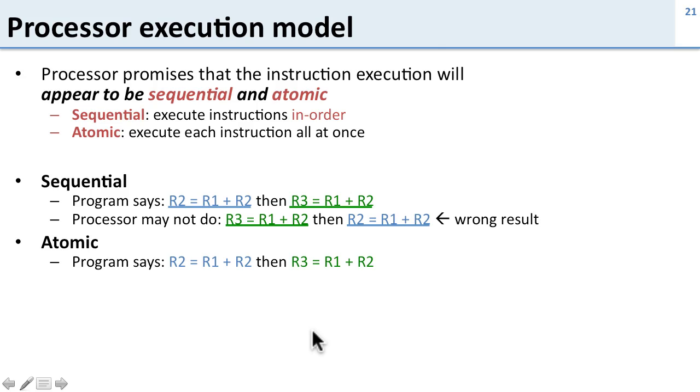Atomic means that if the program says we do the first instruction then the second instruction, the program has to finish doing the first instruction before it's allowed to start the second instruction.